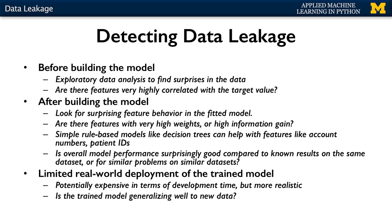Also look for overall surprising model performance. If your model evaluation results are substantially higher than the same or similar problems on similar datasets, look closely at the instances or features that have most influence on the model. One more reliable but potentially expensive check for leakage is to do a limited real-world deployment of the trained model to see if there's a big difference between the estimated performance from training and development results and the actual results. However, this check may not give much immediate insight into where leakage is happening, or if any drop in performance is due to other reasons like classical overfitting.